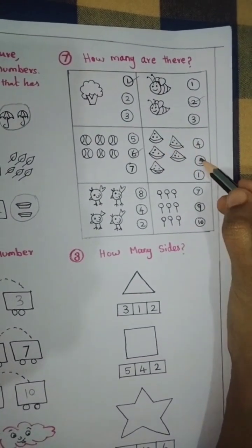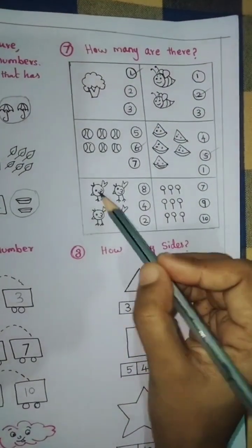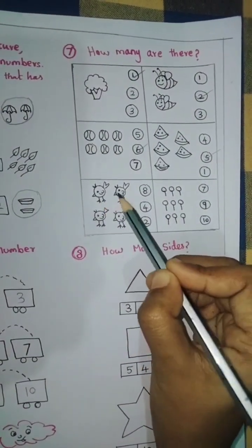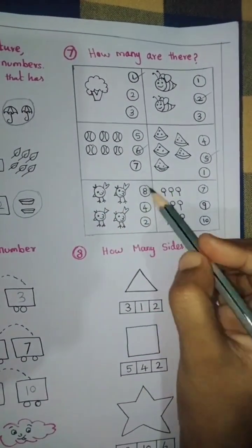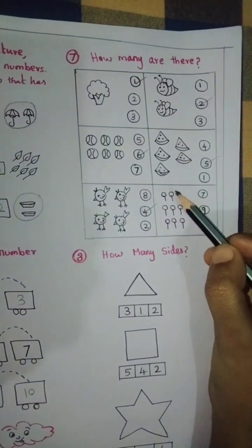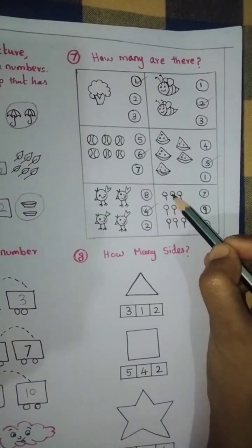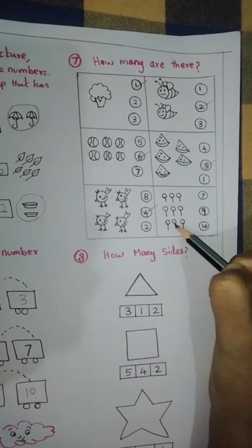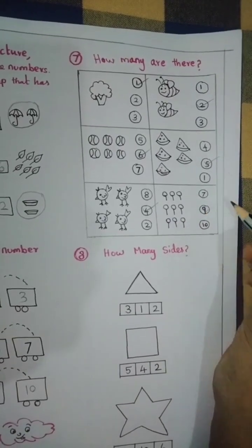Next, watermelon pieces. 1, 2, 3, 4, 5 pieces. Tick number 5. Next, bird. 1, 2, 3, 4, 5, 6, 7, 8, 9 lollipops. Tick number 9.